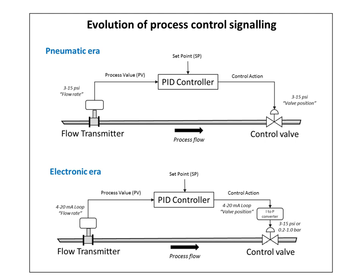Transistor electronics enabled wiring to replace pipes, initially with a range of 20 to 100 mA at up to 90 V for loop-powered devices, reducing to 4 to 20 mA at 12 to 24 V in more modern systems. A transmitter is a device that produces an output signal, often in the form of a 4 to 20 mA electrical current signal, although many other options using voltage, frequency, pressure, or ethernet are possible.